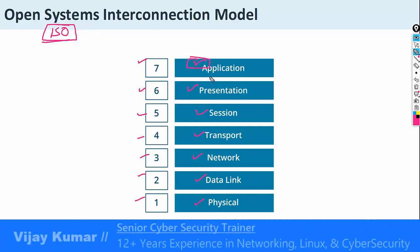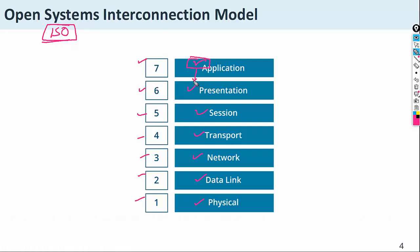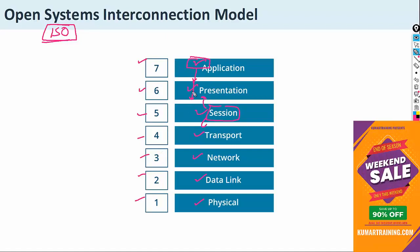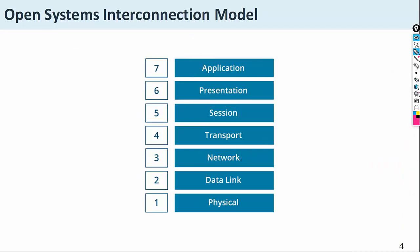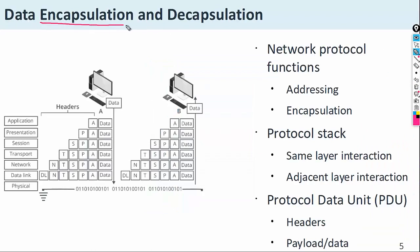When data reaches the Application layer, some processing happens and then the data is forwarded to the next layer. Every layer receives data from the previous layer, performs some process, and forwards it to the next layer. This mechanism is called Encapsulation and Decapsulation — two processes that happen at each layer.